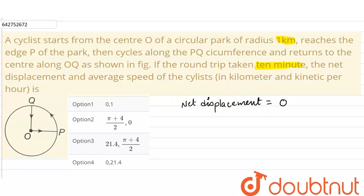Now talking about the average speed - average speed is total distance upon total time.